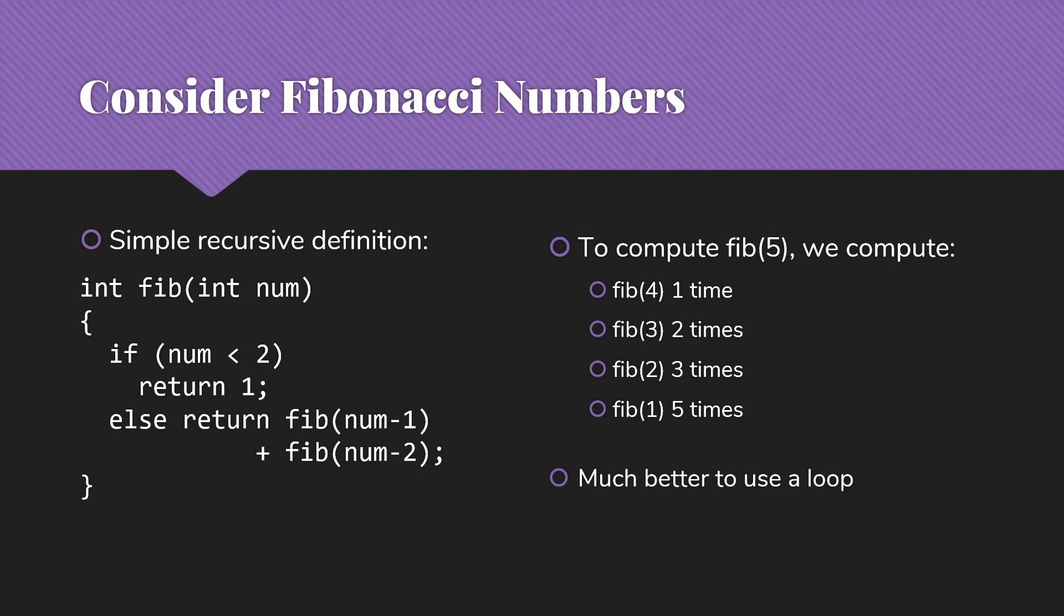Then we're going to have to do Fibonacci of 3 two times. Once for the one call to Fibonacci of 5, and once for the call to Fibonacci of 4. Then Fib of 2, we're going to need to do three times, once for the 4, and twice for the 3s. But then 1, we're going to need to do five times, twice for the 3s as the second call, and three times for the 2s as the first call. We're making 11 function calls to get Fib of 5 computed. Now think about how that's going to grow as we continue to add to the size of the initial Fib.